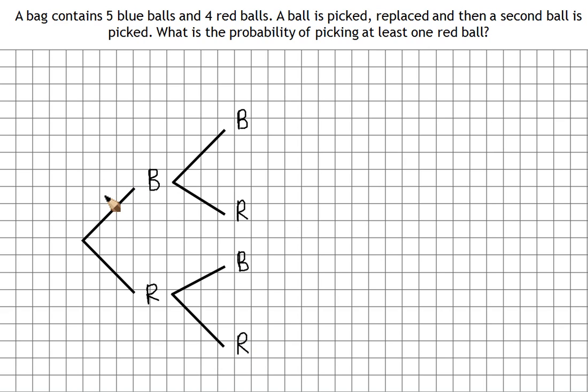Now our probabilities go here. To start with we've got five blue balls out of nine altogether, so the probability of picking the first blue is five ninths. The probability of picking red, we've got four red balls out of nine altogether, so the probability of the first red is four ninths.